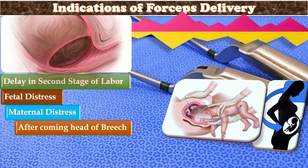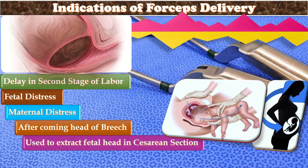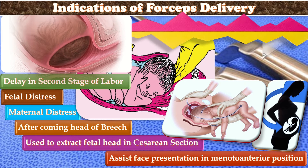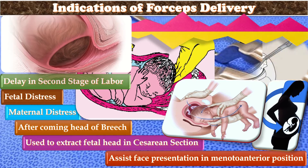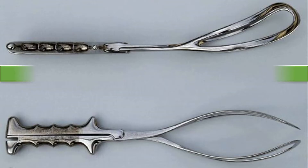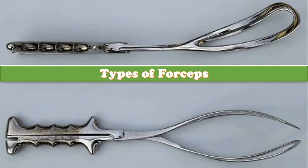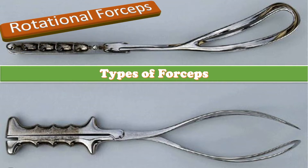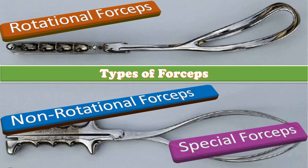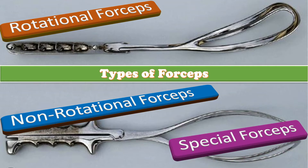Forceps are also used for the aftercoming head of the breech, to extract the fetal head in cesarean section, and to assist face presentation in the mento-anterior position. The different types of forceps include rotational forceps like Kielland and Barton forceps, non-rotational forceps including Neville-Barnes, Simpson's, and regular forceps, and the special type: the Piper forceps.